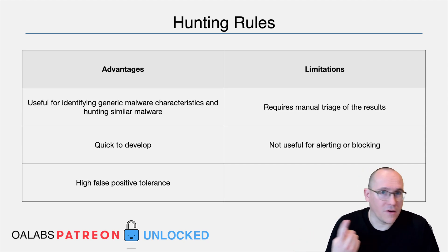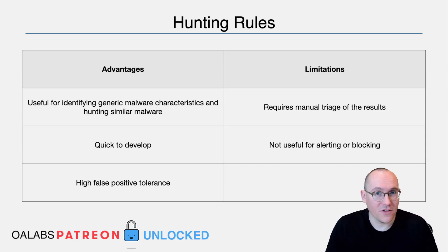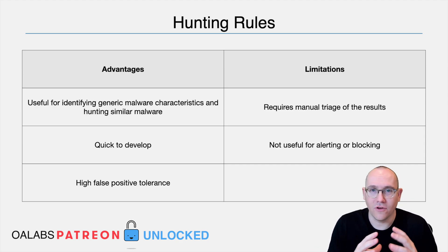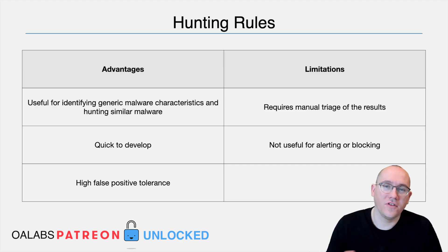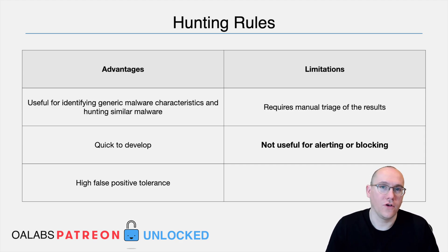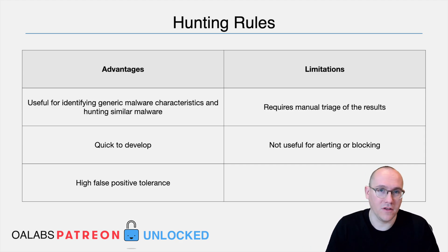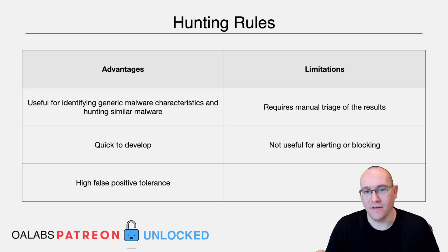The main advantages of hunting rules are that they're quick to develop and very loose with no real constraints. However, the results must be triaged by an analyst — you can't rely on them for concrete decisions. You need a second-stage process to examine the results. This also means these rules are not ideal for SOC alerts or inline blocking; for example, you wouldn't want to block all samples that have a run key, since many benign samples use it.